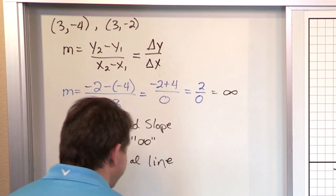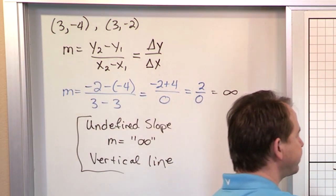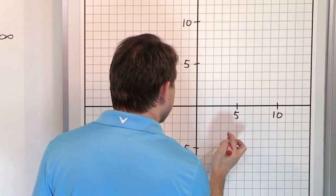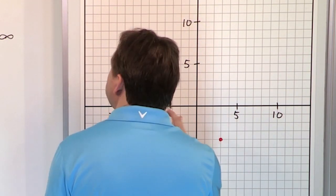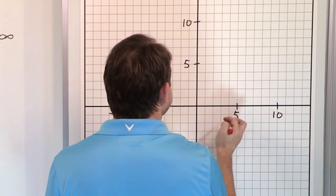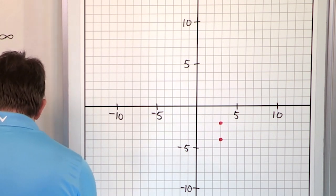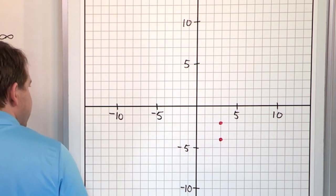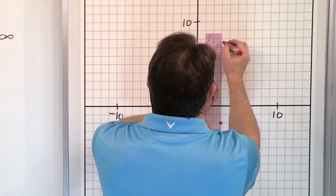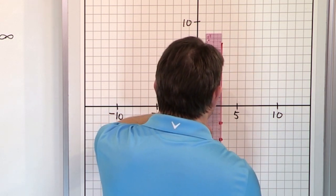Let's prove it by plotting these points. Plot (3, -4) and (3, -2). Just as you would suspect, you have a vertical line.